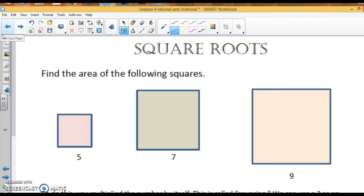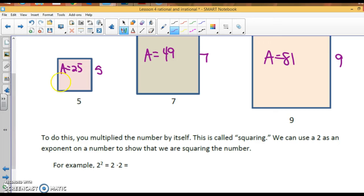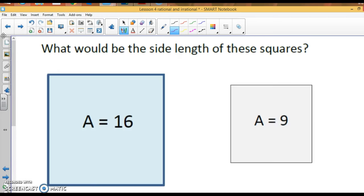All right. Take a look at these squares. This square is 5×5, so the area is 25. This is 7×7, so the area is 49, because you do length times width. This square is 9×9, so the area is 81. Those areas are called perfect squares. These are squaring. The reason we call it a perfect square, because it represents a perfect square. So we can use 2 as an exponent on a number to show that we are squaring the number. So this is 5 squared, 7 squared, 9 squared.